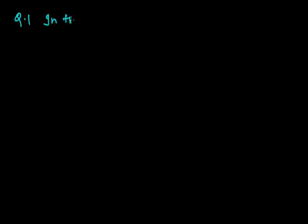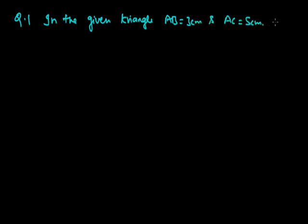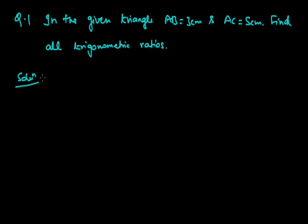Question: In the given triangle, AB is equal to 3 cm and AC is equal to 5 cm. Find all trigonometry ratios. In this, it is given that there is a triangle in which two sides are given, and accordingly we need to find out all trigonometry ratios.